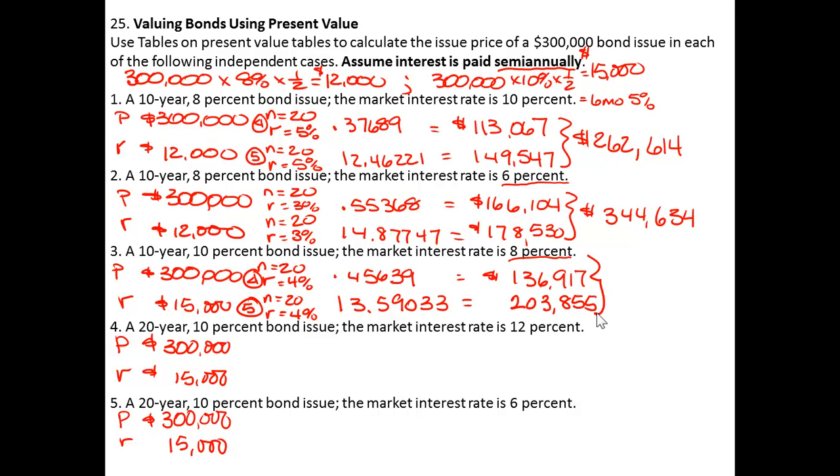So adding those two together, the bond's price in today's dollars, the present value, is $340,772.